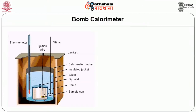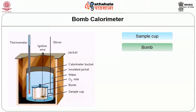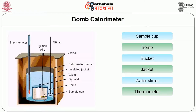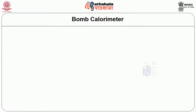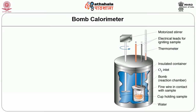The bomb calorimeter in detail consists of: the sample cup for weighing the food sample; the bomb filled with pure oxygen enclosing the food sample; the bucket holding a known amount of water in which the bomb is immersed; the outer double-walled insulating jacket; a water stirrer; a thermometer; and an ignition wire to send current.